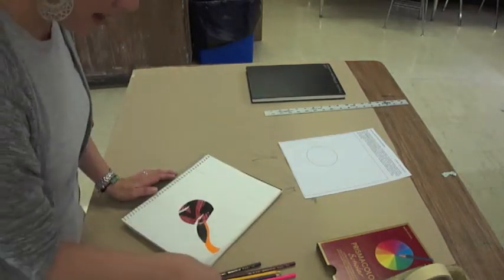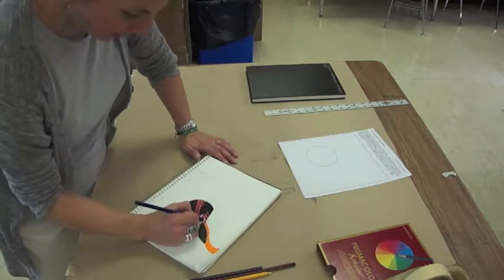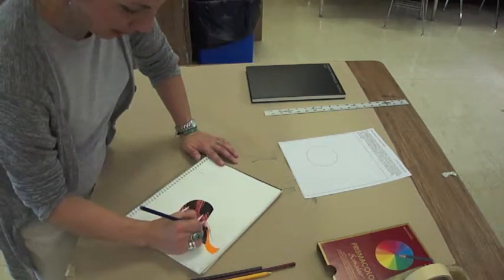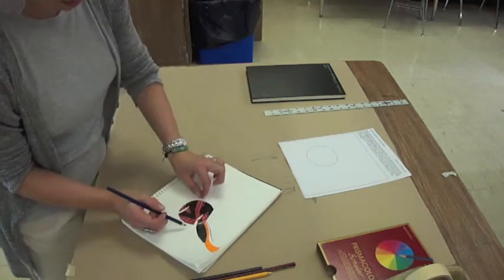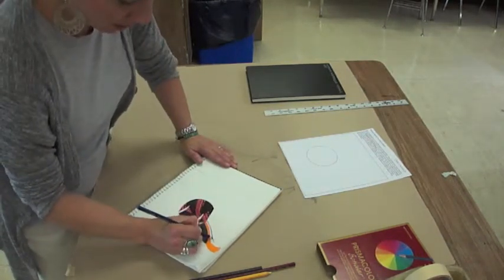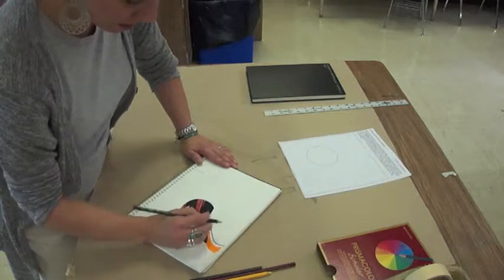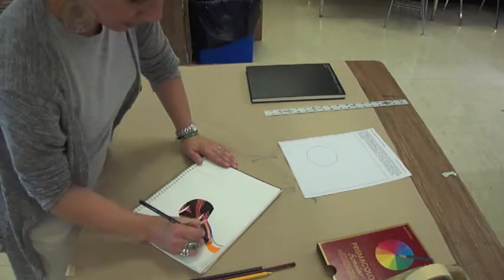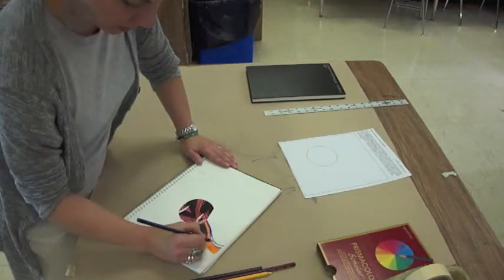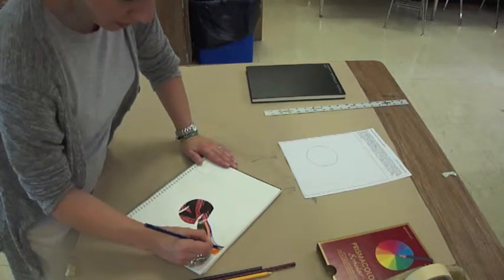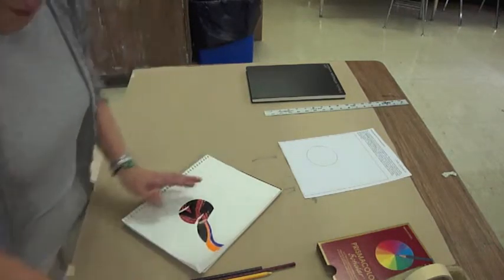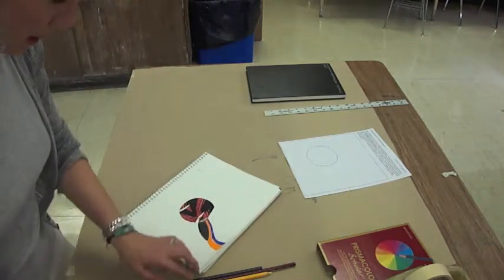Then the next color is the purple. I want to follow that because if you see, there's almost like stripes. So I'm going to follow that orange and keep it in line with the orange.